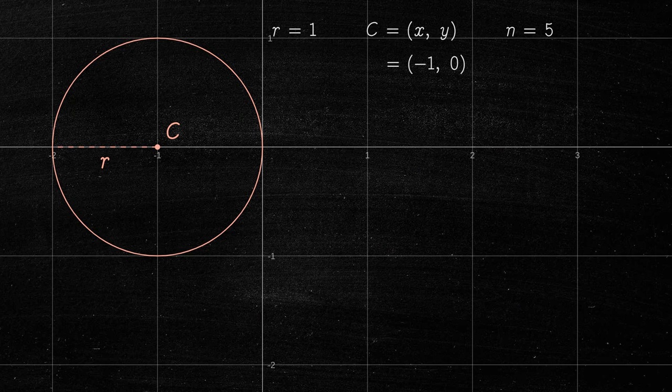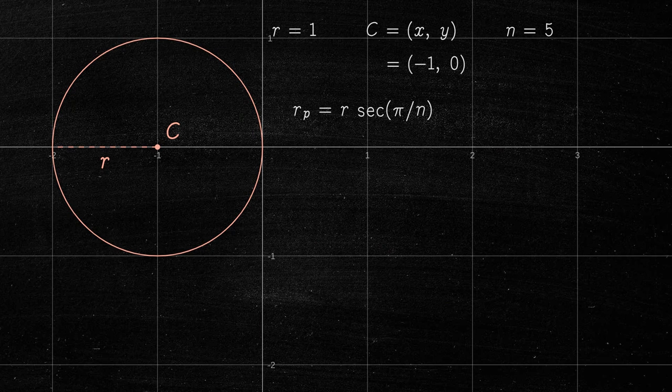The radius of a regular polygon with n sides circumscribed to a circle is equal to the radius of the circle multiplied by the secant of pi over n. For example,